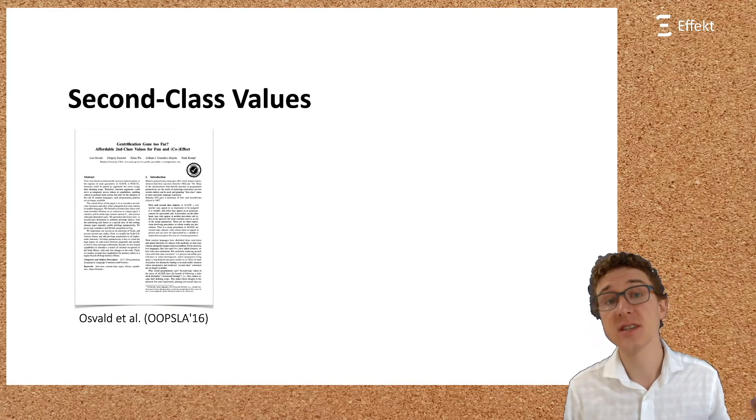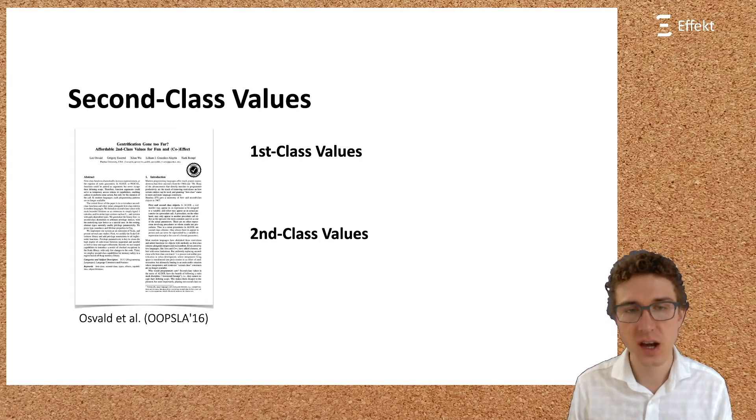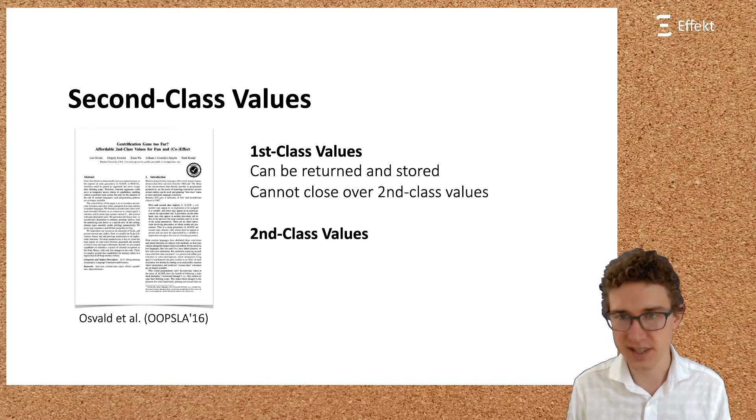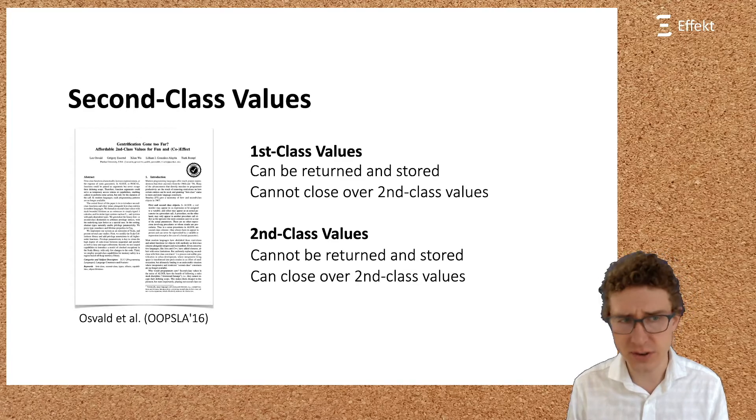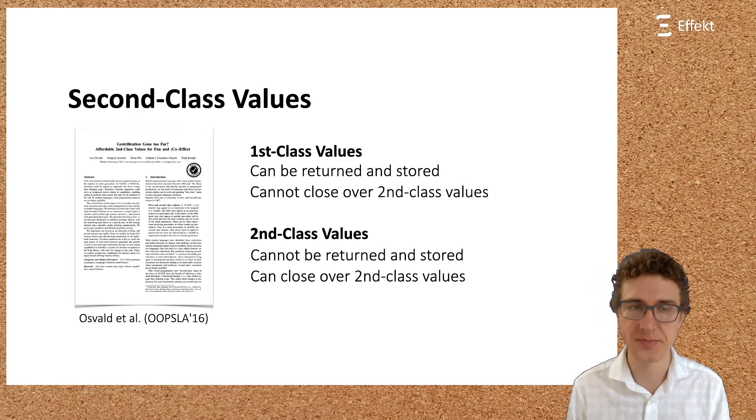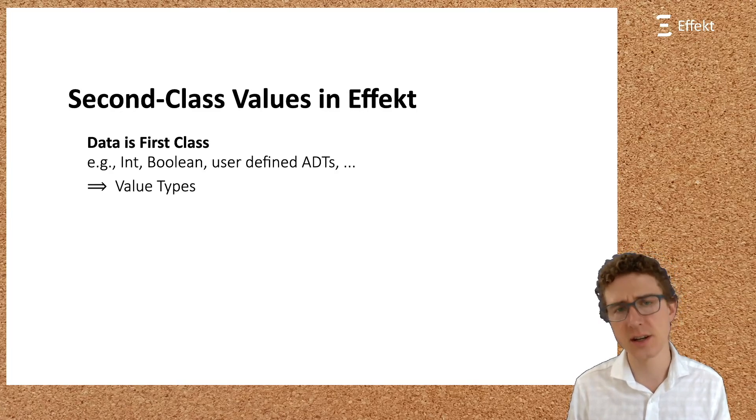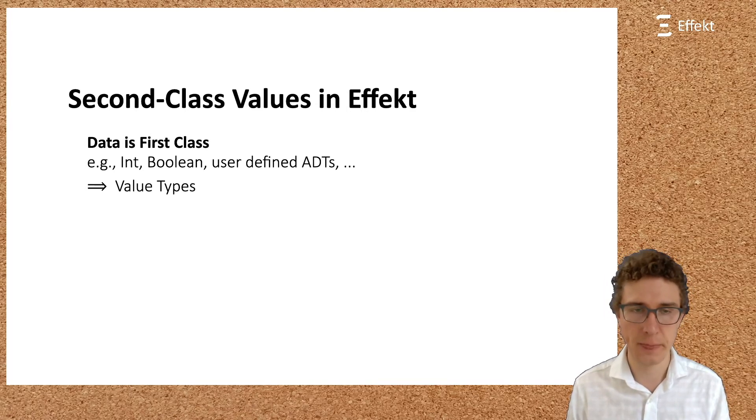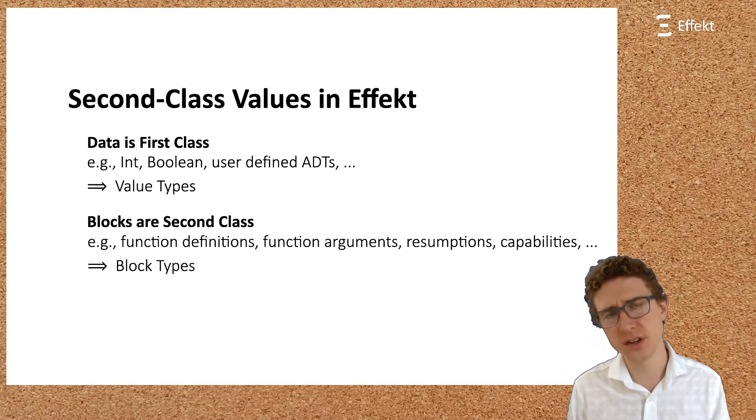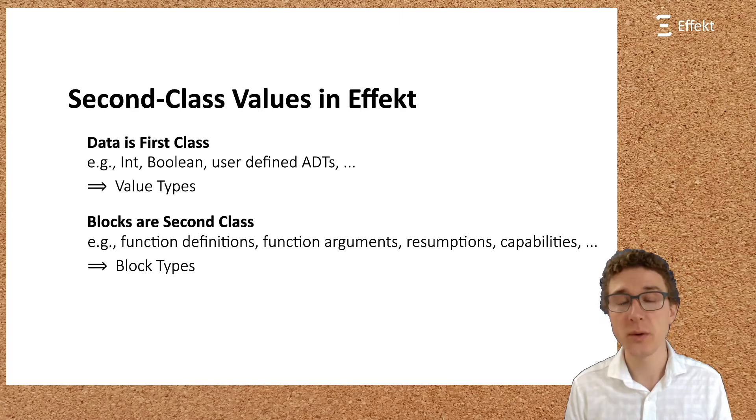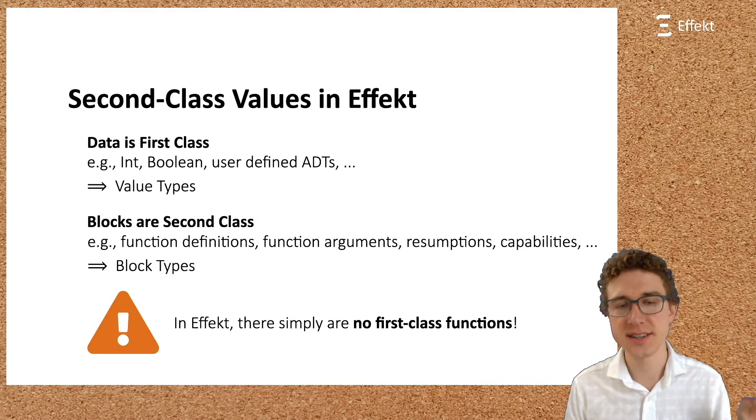Leo Oswald et al. introduce a type system that distinguishes between first-class values and second-class values. First-class values can be returned and stored, but cannot close over second-class values. In contrast, second-class values cannot be returned and stored, but they can close over other second-class values. In the effect language, we make a similar distinction. It is actually very easy. We treat all data as first-class. That includes built-in types like int or bool, but also user-defined algebraic data types. In our type system, we speak of value types. In contrast, all blocks are second-class. This includes function definition, function arguments, resumptions, and capabilities. To avoid confusion, we typically do not speak of functions, but of blocks. Similarly, in our type system, we speak of block types. We will see what that means in a second, but let me point out that this implies that in effect, there simply are no first-class functions. We killed every functional programmer's favorite feature.